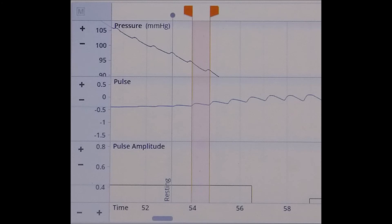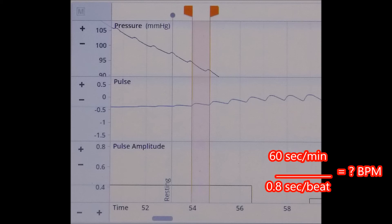We will also need to calculate the patient's heart rate in each one of these conditions. Use the bracket tool to select the region from the start of one beat to the start of the next. Look to the bottom of the screen and determine how much time has elapsed. Finally divide 60 seconds per minute by the duration of the beat. In this case we have 0.8 seconds per beat. This will give you the patient's heart rate.